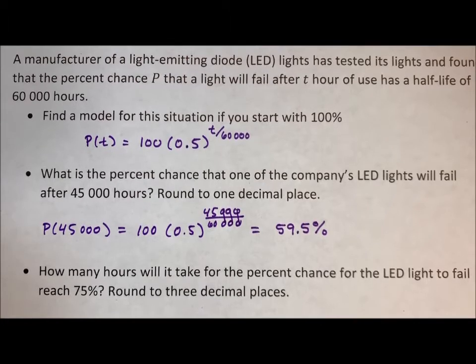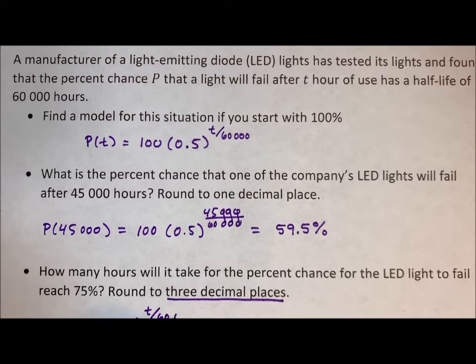How many hours will it take for the percent chance for the LED light to fail to reach 75%? Round to three decimal places. So we want 100 times 0.5 to the t over 60,000.